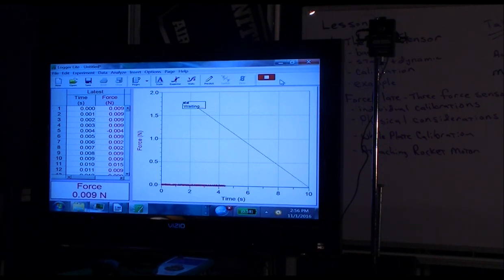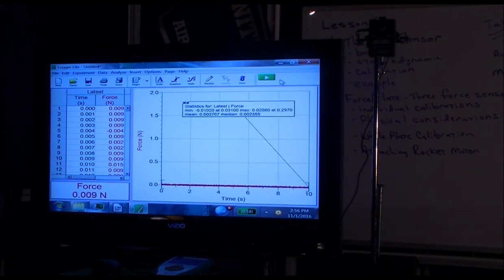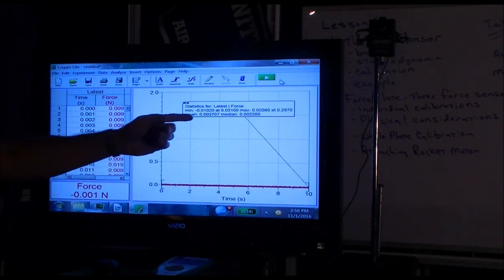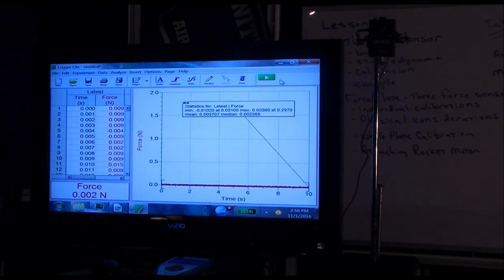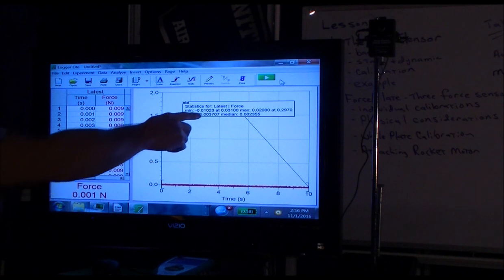And if you run through 10 seconds at 1,000 samples per second, the average of all those measurements should be very close to zero. So the average is actually 0.0037. And if you notice,